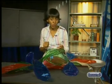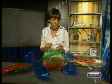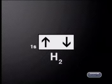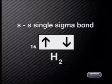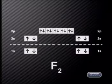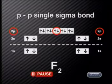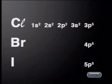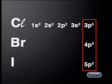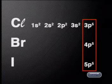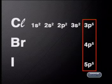But not all diatomic molecules form identical types of bonds. In the hydrogen molecule we have an s-s single sigma bond, but in fluorine there is a p-p single sigma bond. Can you work out which other diatomic molecules have the same sort of bond as fluorine? In chlorine, bromine, and iodine, the valence electrons are all in p orbitals. In each of these molecules, the atoms each share a single pair of electrons to form a p-p single sigma bond like that of fluorine.